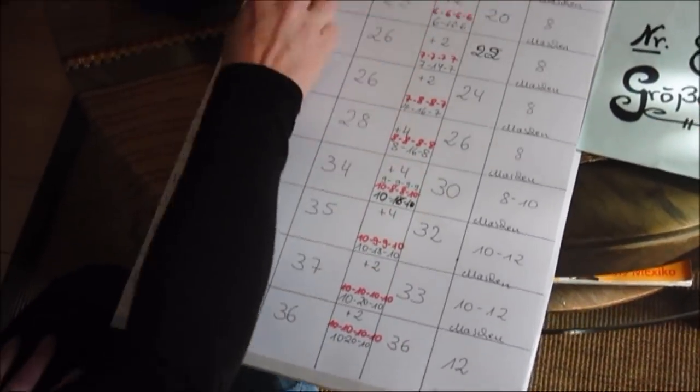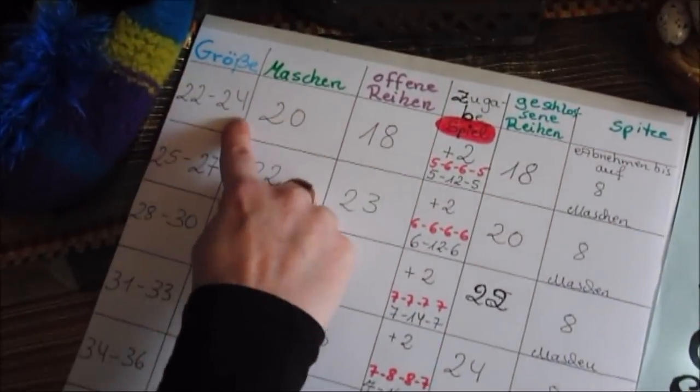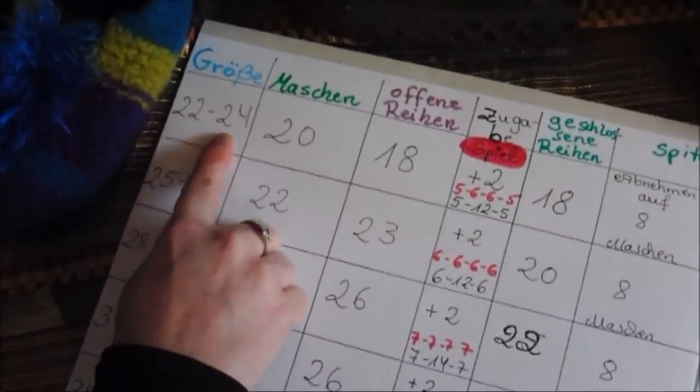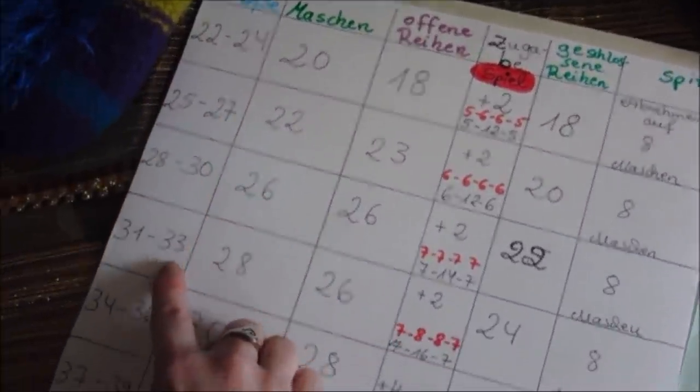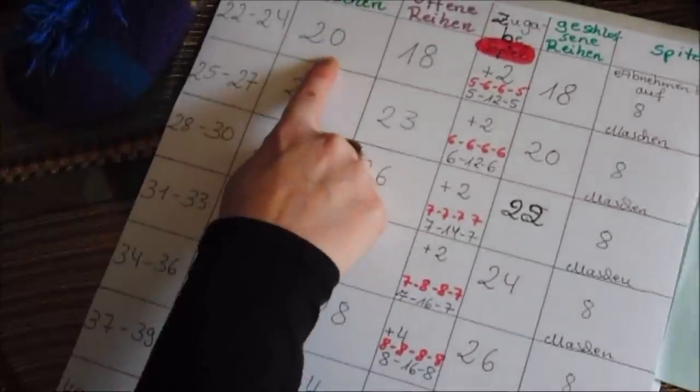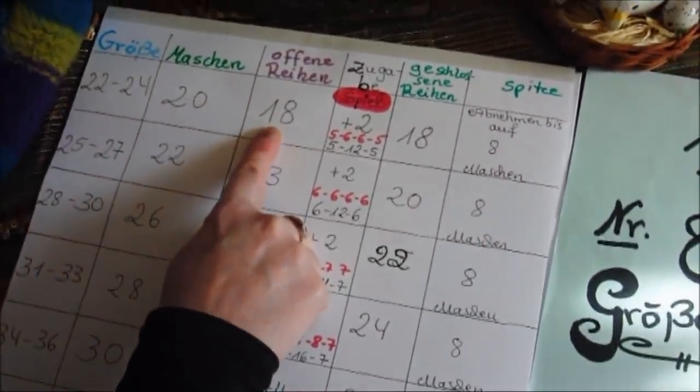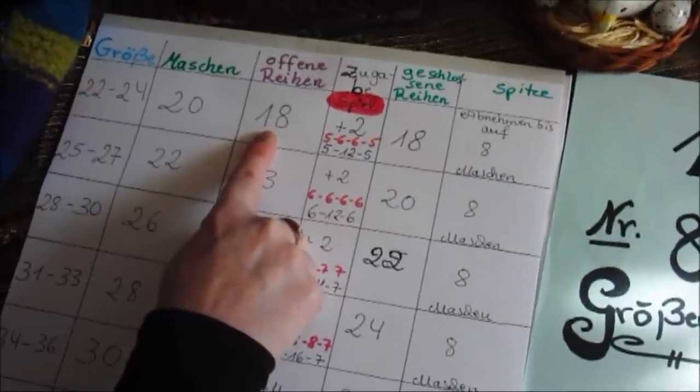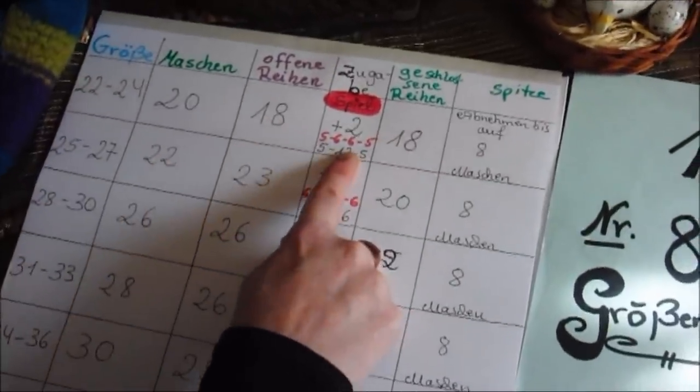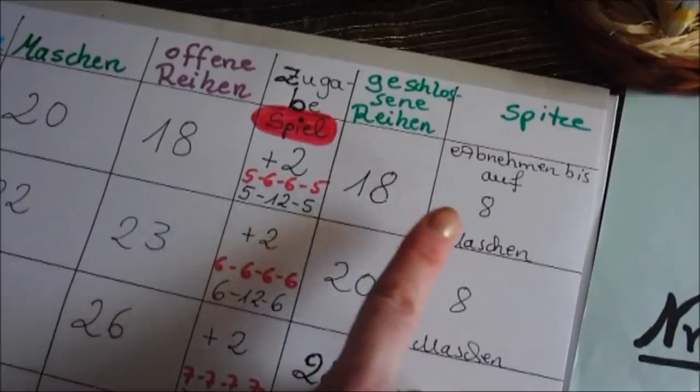Die Tabelle ist aufgebaut in der Größe - das sind immer zwei bis drei Größen - Maschen, die ihr anschlagen müsst, offene Reihen mit der Rundstricknadel in Größe 8, die Zugabe, die geschlossenen Reihen und dann die Spitze.